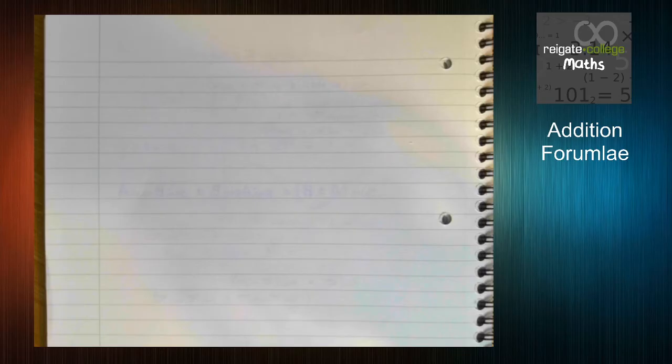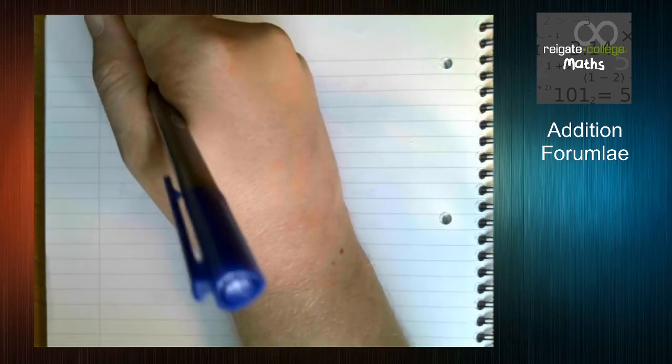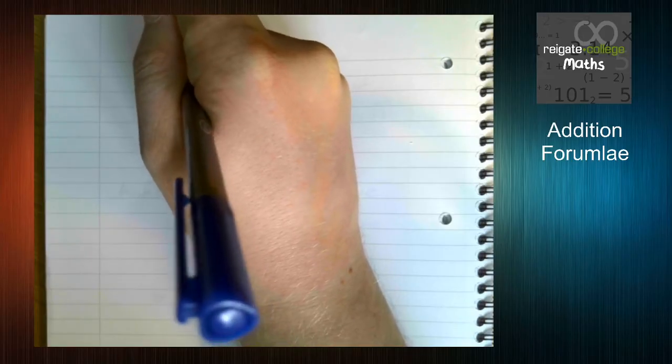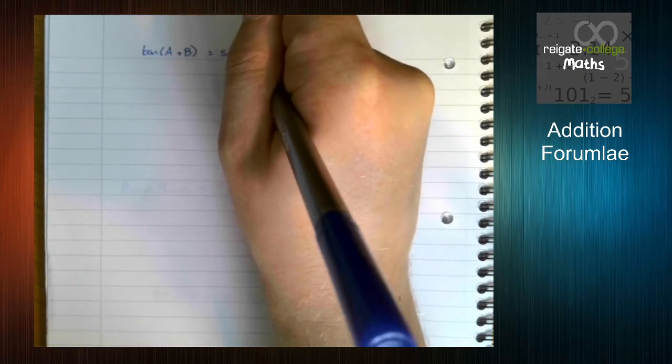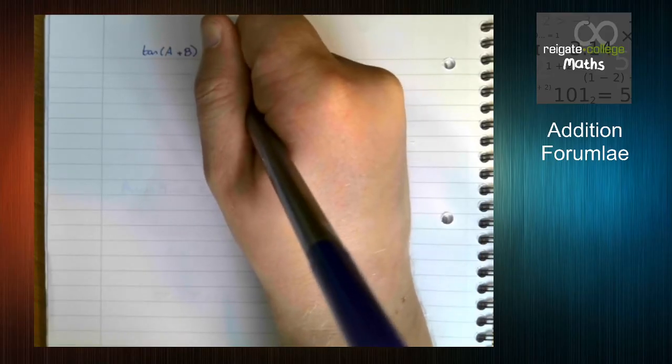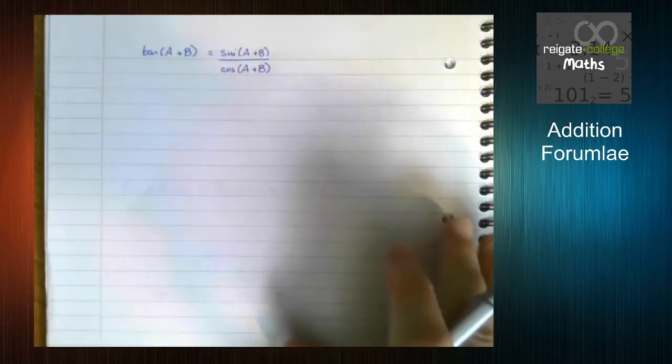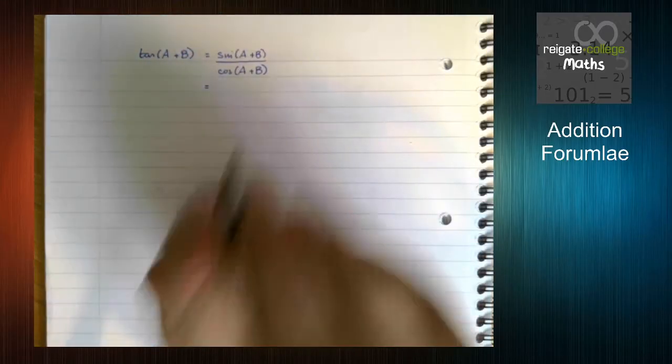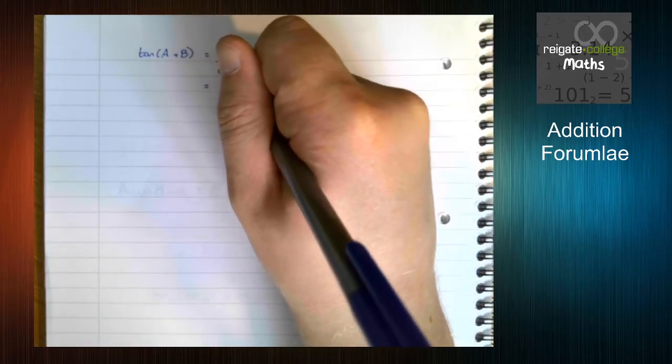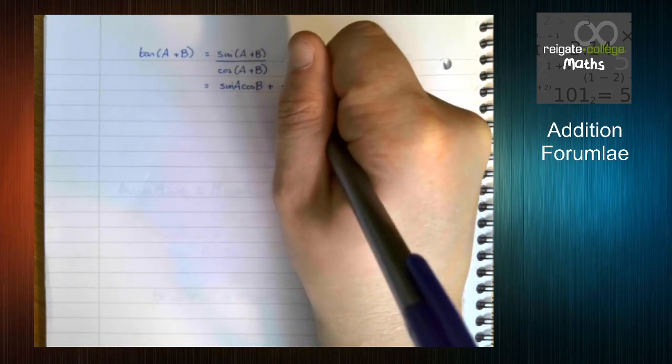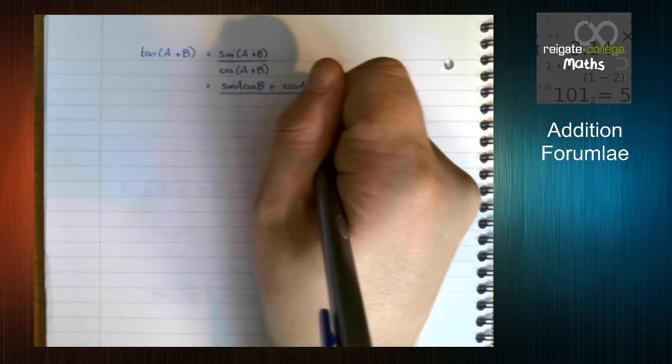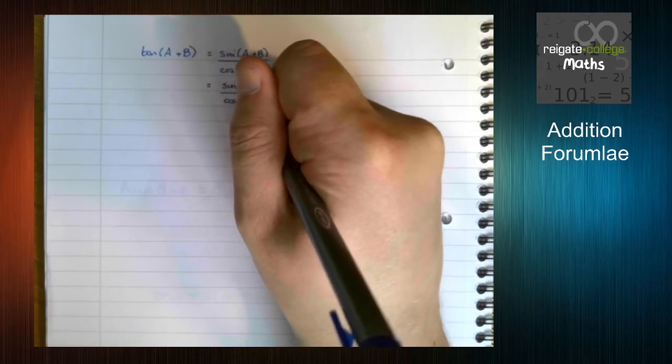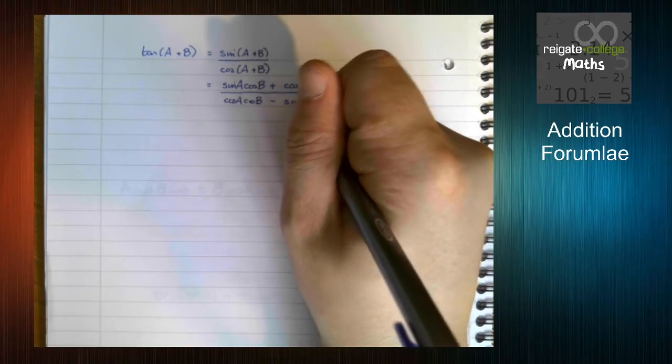So the tan identity we're actually going to derive. This is something that you might be required to do in the exam, not using triangles. So we're going to take tan A plus B. Now we know from our trig identities that this is going to be sine of the angle over cos of the angle. Now using the formula we just worked out, or we just looked at, sin A plus B is sin A cos B plus cos A sin B over cos A cos B minus this time sin A sin B.